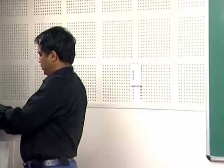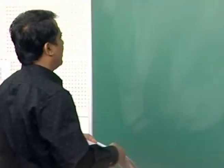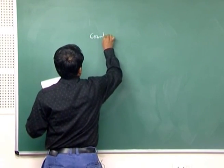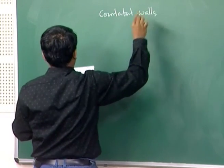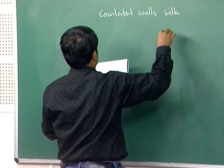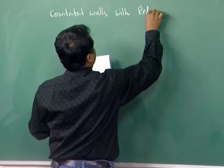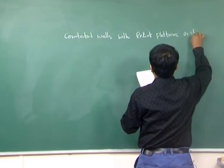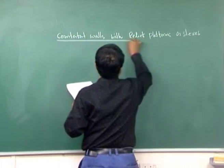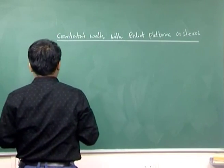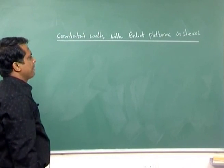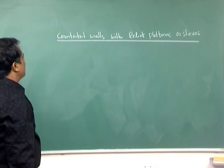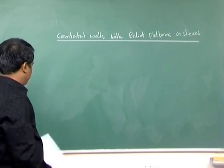Now for one more important topic in cantilever and counter fort walls: sometimes counter fort walls are provided with relief platforms, also called sleeves. When the stability analysis cannot be satisfied within the permissible values of tentative dimensions, providing relief platforms or sleeves makes the wall more stable.